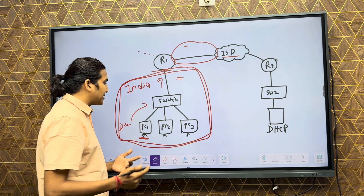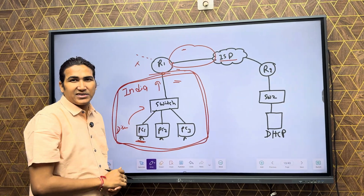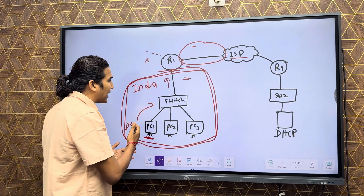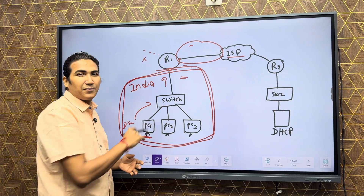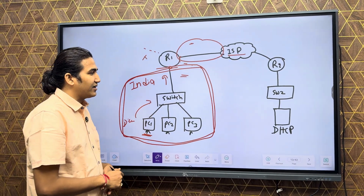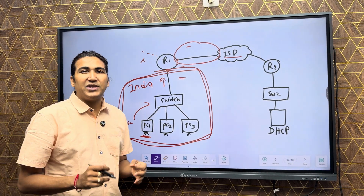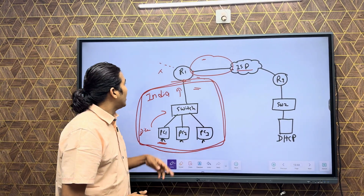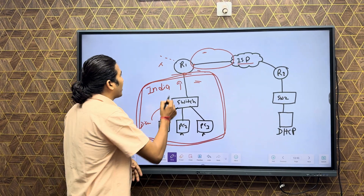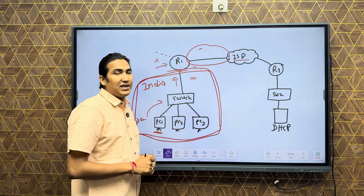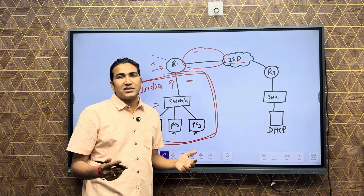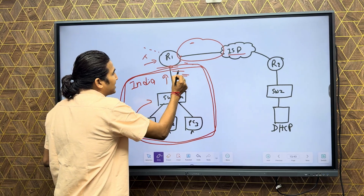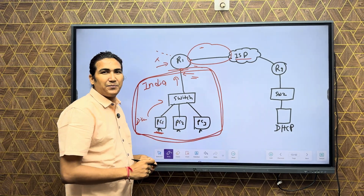The client machine is going to generate a Discover message and the router will be discarding it — it can't discover the DHCP server. We don't have any DHCP server within the broadcast domain or subnet. In this case, DHCP relay agent comes into the picture. The router can act as a DHCP relay agent. You will run one command on the LAN interface: IP DHCP relay agent.